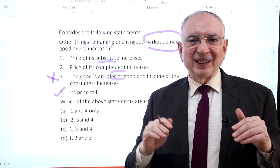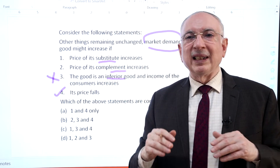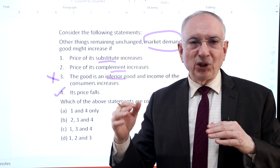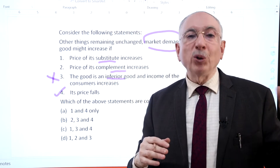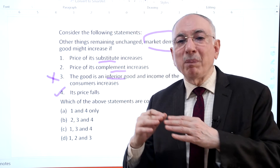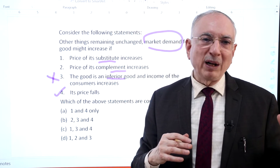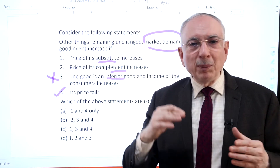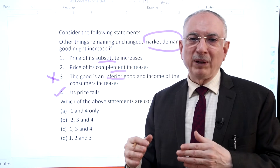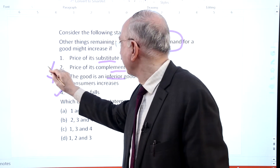Complementary goods are consumed together. Examples include tea and sugar, and petrol and bikes. An increase in the price of petrol is likely to decrease the demand for bikes. Similar is the case with other complements. Hence statement 2 is not correct.